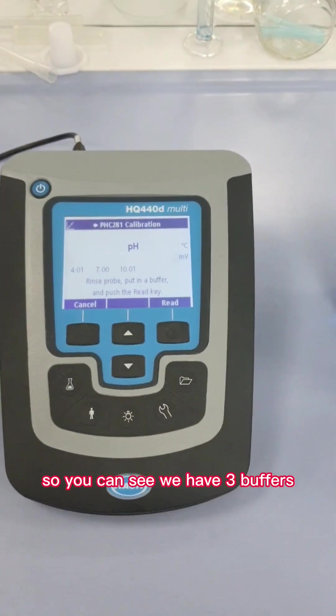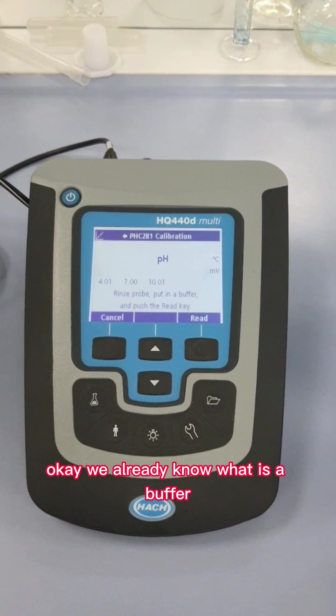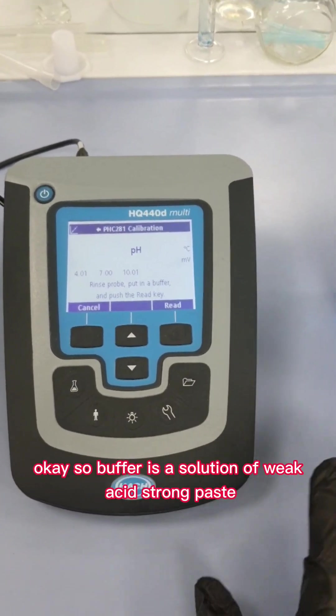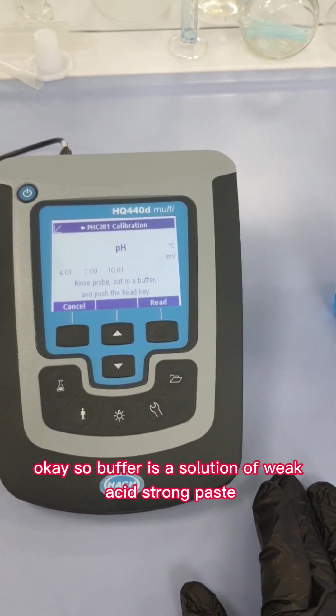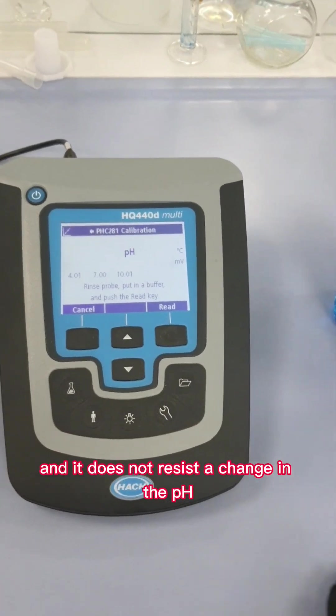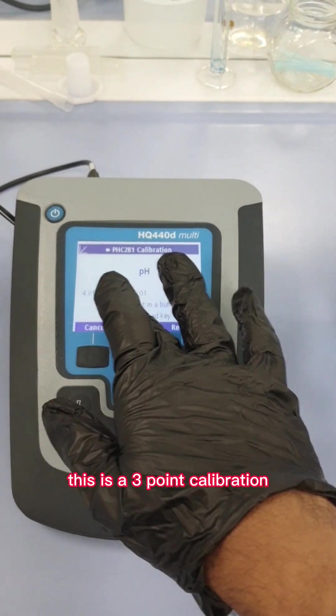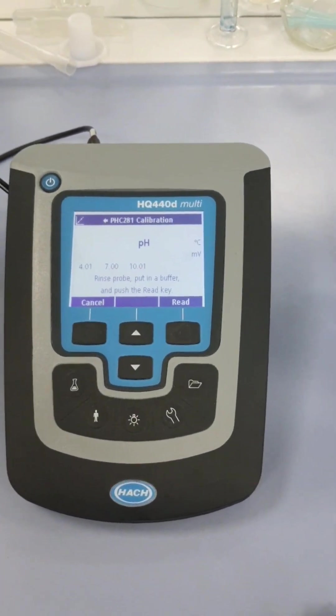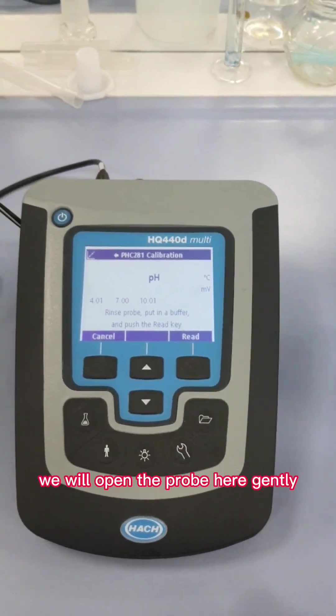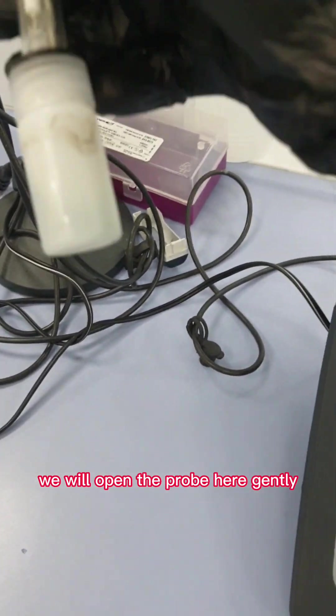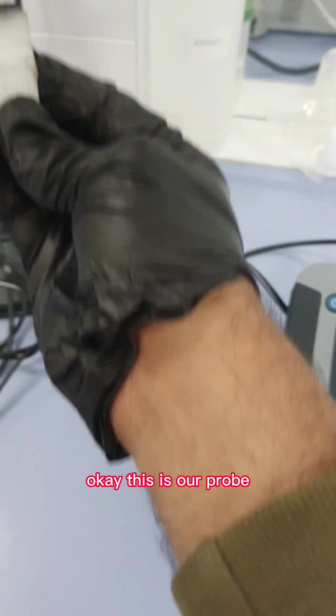So we'll press the calibrate button. You can see we have three buffers. We already know what is a buffer - a buffer is a solution of a weak acid and strong base or strong acid and weak base, and it does not resist a change in the pH. Now what we need to do - this is a three-point calibration. First of all, we will open the probe here gently. This is our probe.